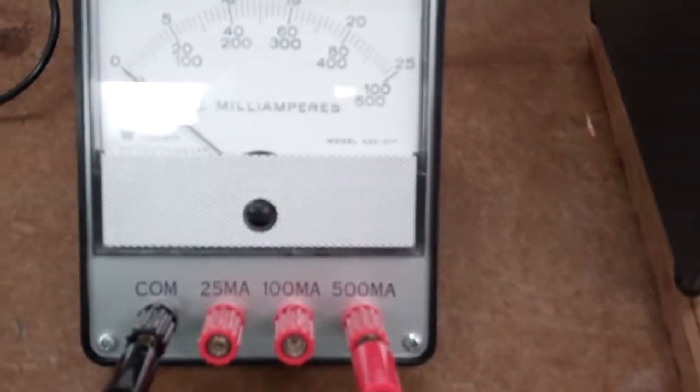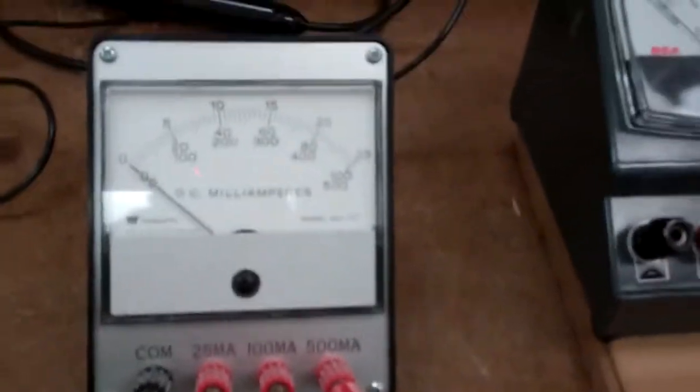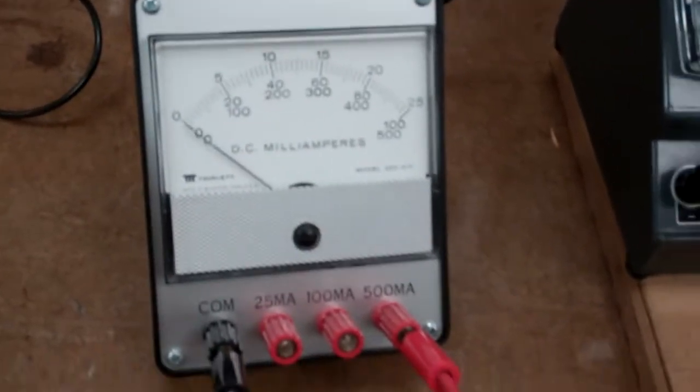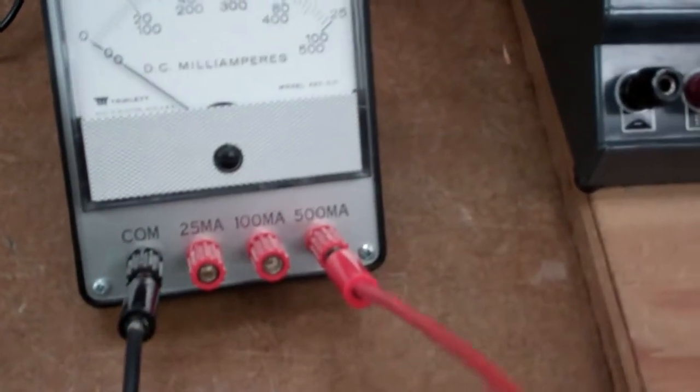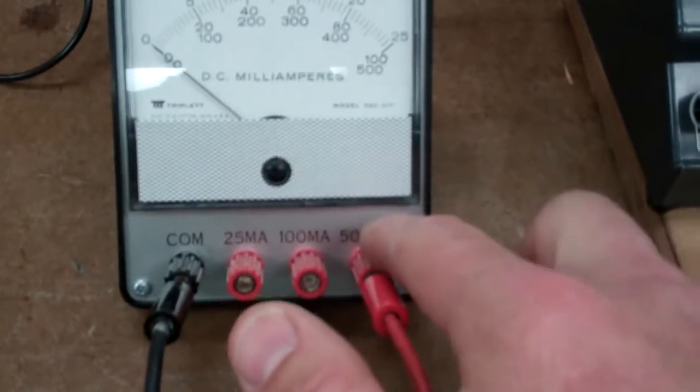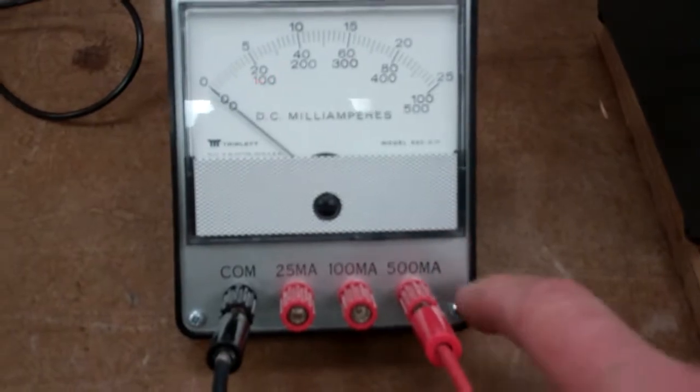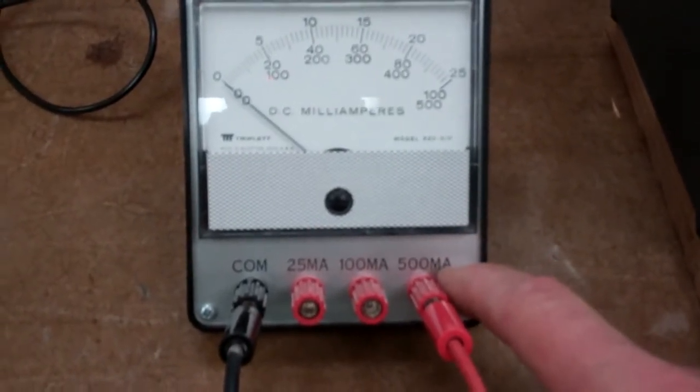We're actually going to use these which have very specific ranges already preset. If you notice there's a common, which is your black lead, which I've got already hooked up here, and all the red leads over here. This one with the triplet goes up in range, and we always start with the highest range and move our way down.